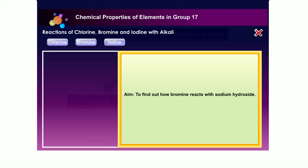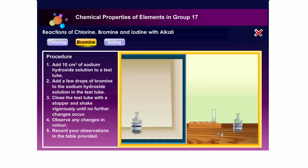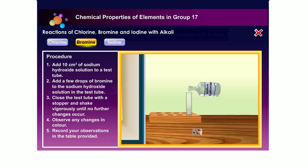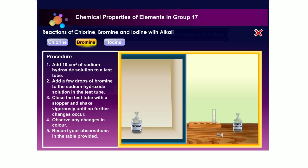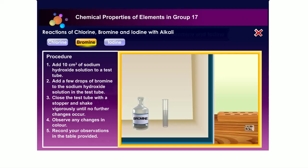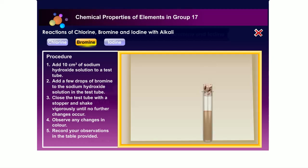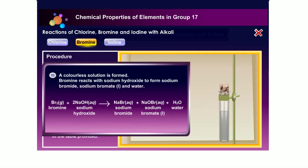Let us now find out how bromine reacts with sodium hydroxide. A colourless solution is formed. Bromine reacts with sodium hydroxide to form sodium bromide, sodium bromate-1, and water.